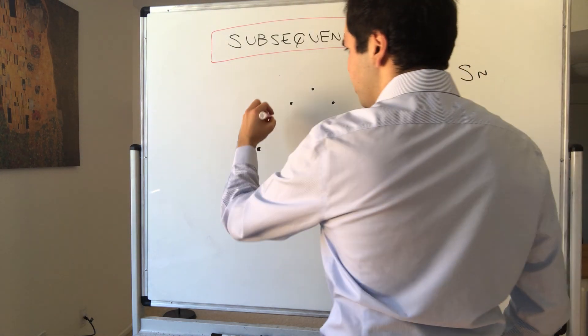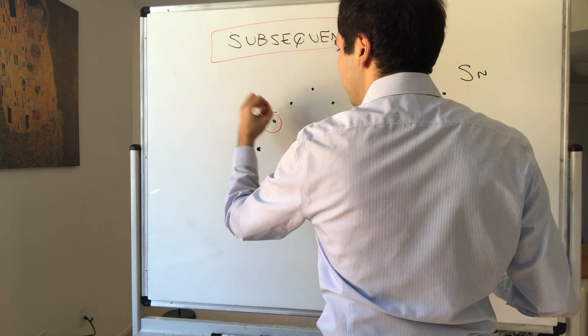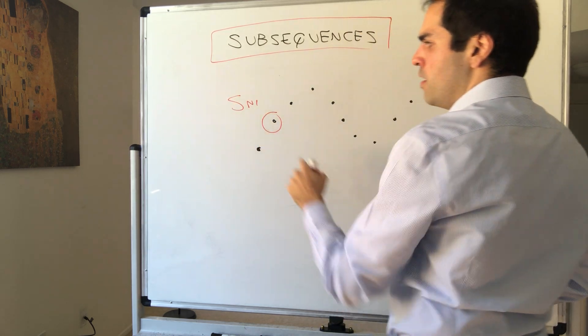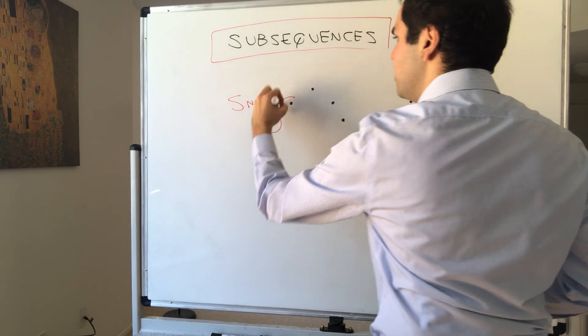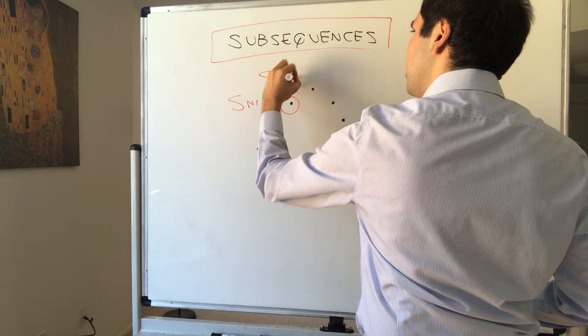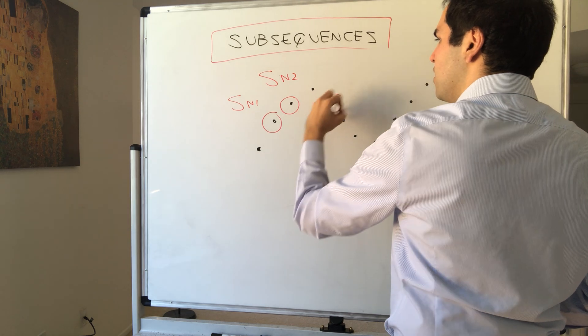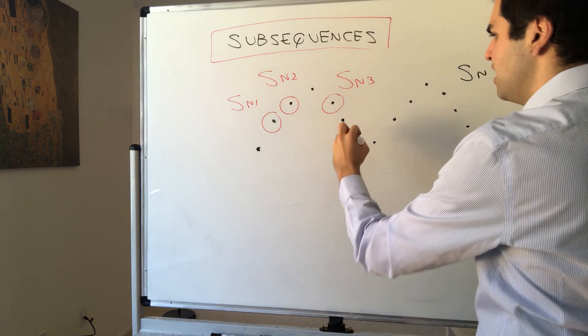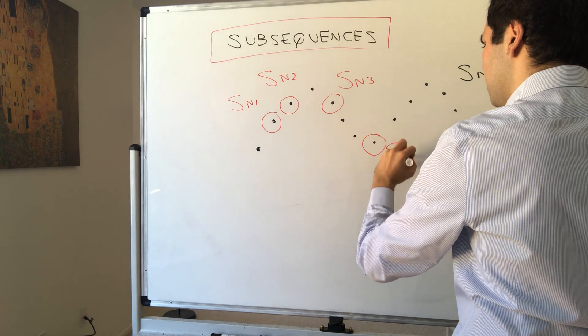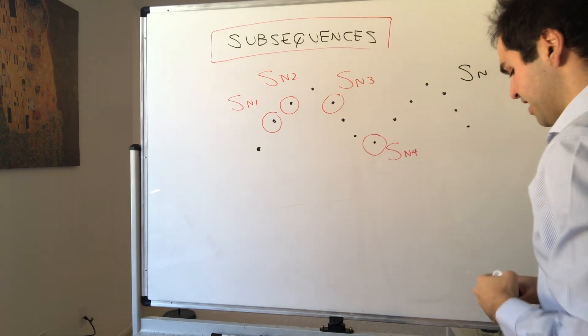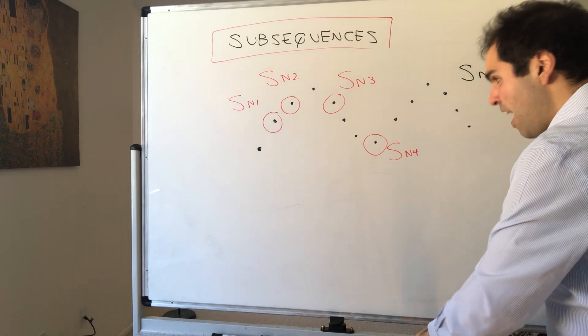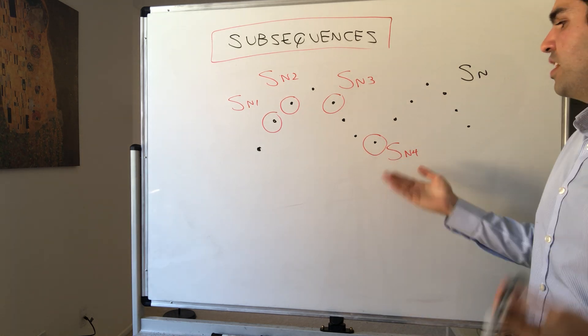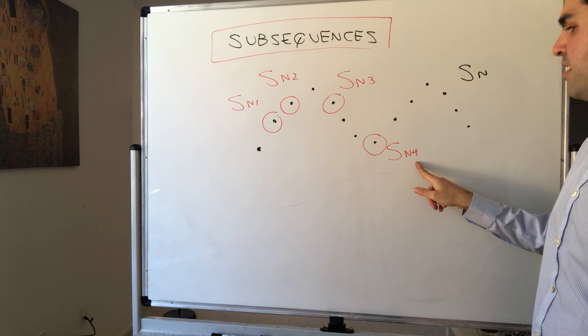So for instance, here's an example of a subsequence. So the first stop is the second city, the second stop of the express train is the third city, the third stop, Sn3, is the fifth city, and the fourth stop, Sn4, is the eighth city. And in fact, that's what an express train is. So that's what a subsequence is.